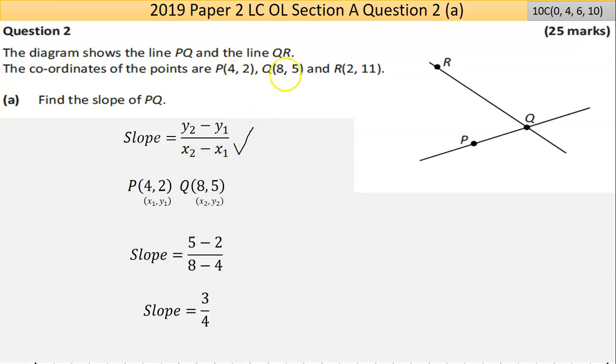The slope formula uses the two points I'm looking at here and I've labeled them: first x value, first y, second x, second y. All I'm going to do now is put the numbers where the letters are. So instead of y2 goes the 5, instead of y1 goes the 2, instead of x2 goes the 8, instead of x1 goes the 4.